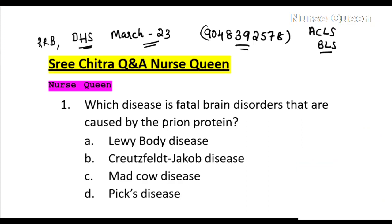First question: which disease is a fatal brain disorder caused by the prion protein? The options are Lewy Body Disease, Creutzfeldt-Jakob Disease, Mad Cow Disease, and Pick's Disease. Creutzfeldt-Jakob Disease is the correct answer — it is a serious brain disorder caused by the prion protein.